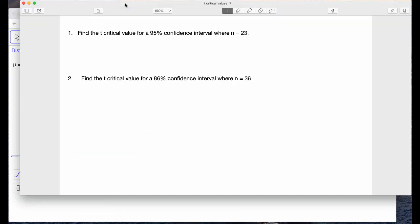So I have some questions set up for us. Find the T critical value for a 95% confidence interval where N equals 23. So we have the two facts right here. We have the confidence level of our interval, and then we have the sample size.